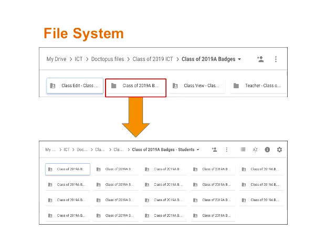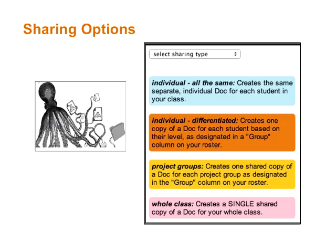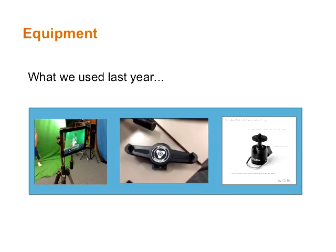This screenshot shows the file system — I've got four folders across the top: mine as the teacher, class view where they can see everything I put in there but can't edit it, and class edit where they can edit anything and add stuff. The sharing options within Doctopus are more advanced than Google Classroom — individual, differentiated, and project groups are the two options we use a lot. If you try to do group work through Classroom, you end up with a whole pile of orphaned files because every student gets a shared file they can edit, and you've got to dig through them to see which ones are in use.